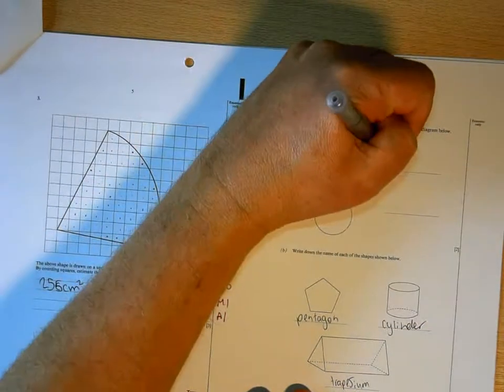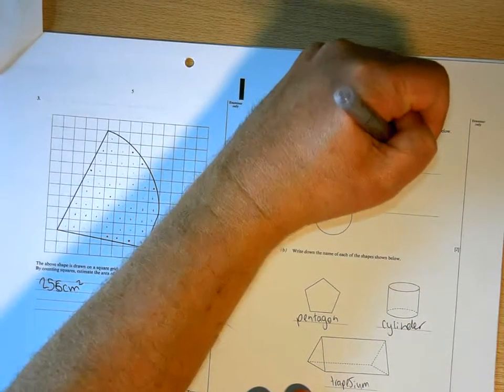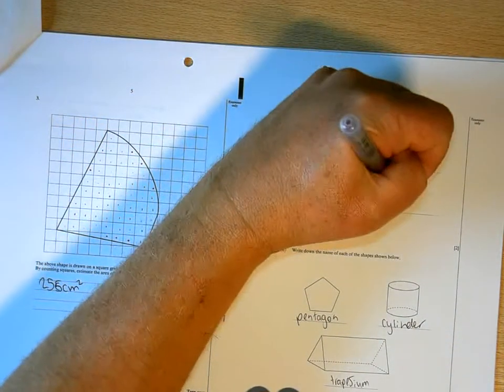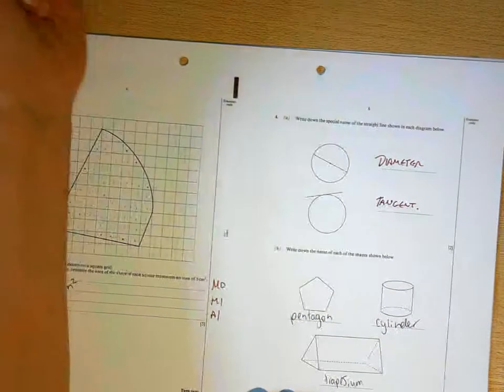This is known as a diameter. A line that touches the circumference of a circle is known as a tangent. You need to know those.